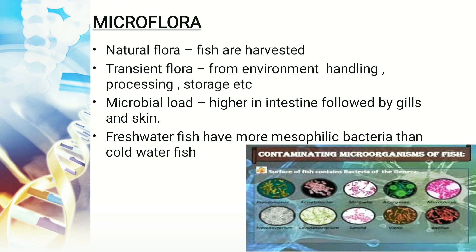This microflora can be natural flora or transient flora. Natural flora can affect the fish when we harvest them. Transient flora refers to contamination from the environment, handling, processing, or storage. An important point is that the microbial load is highest in the intestine of the fish, followed by the gills and then the skin.